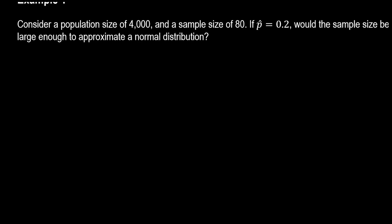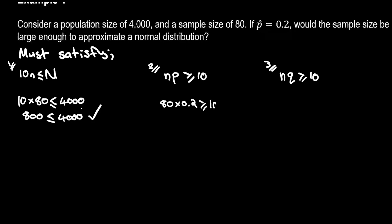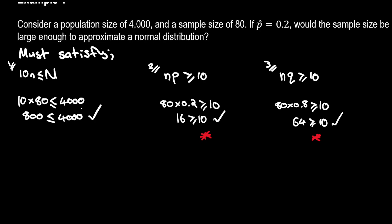P-hat is 0.2, so we need to satisfy the three properties. We can see that all three conditions are satisfied — the first two confirm we can approximate a normal distribution, and the third confirms that our sample size is less than 10% of the true population. Therefore, it is an appropriate sample size and it is large enough to approximate a normal distribution.